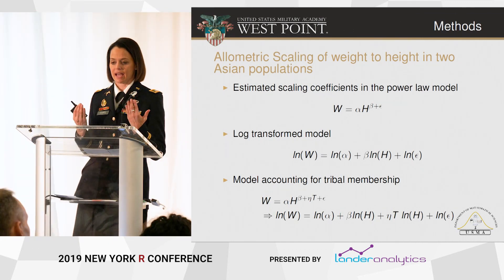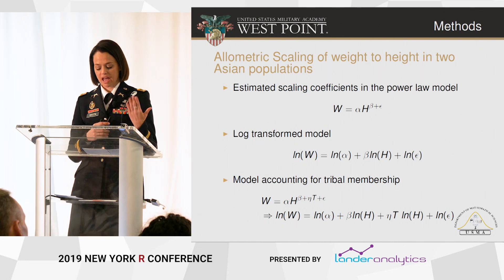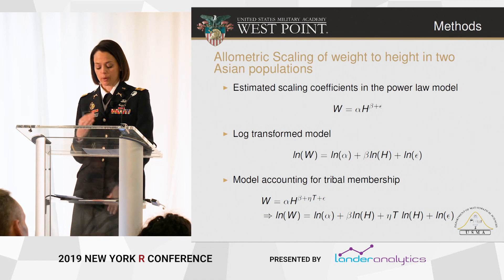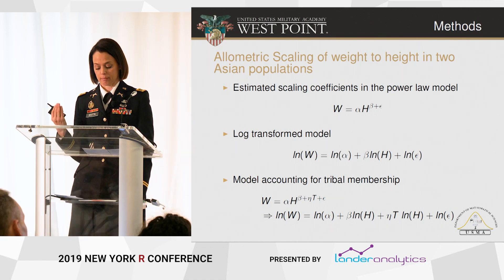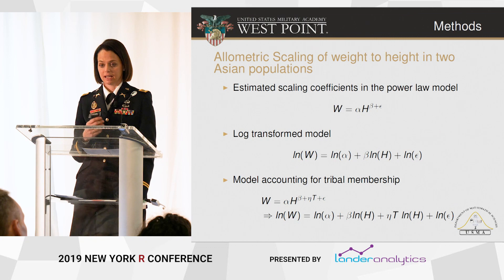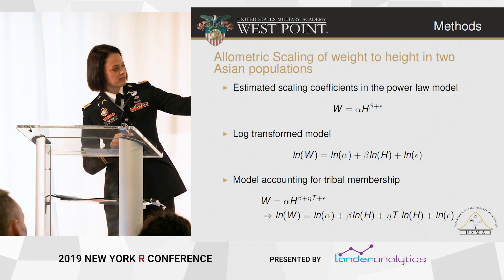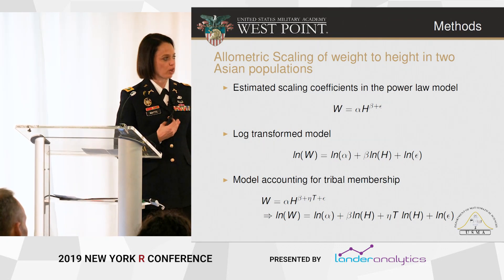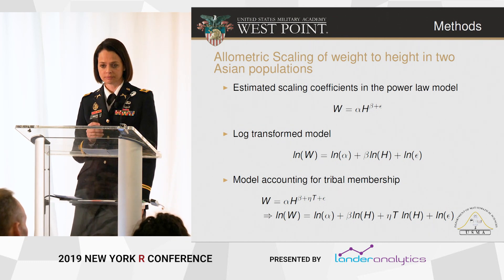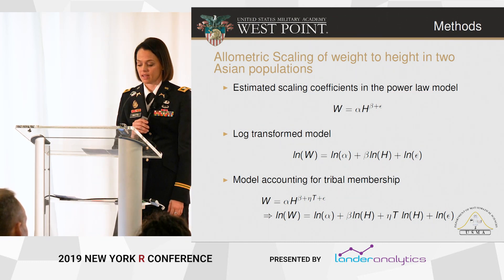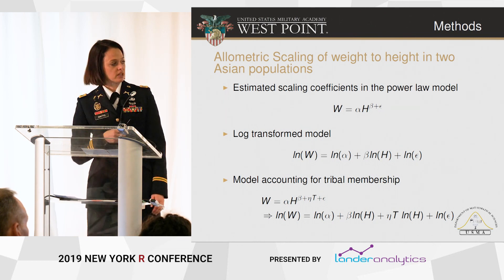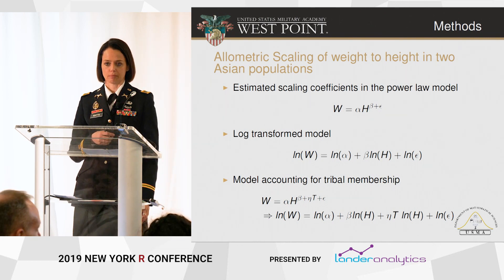The basic allometric model has some biological variable — in this case weight — on the left, and a power law model with some body measurement — in this case height — on the right, with an error term epsilon. Our goal is to estimate alpha and beta in that model. If epsilon turns out to have a log-normal distribution, we can log-transform the model and get a simple linear regression.